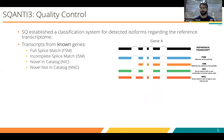If we are missing some of the splice junctions, this is the case of an incomplete splice match. But if we have some kind of novelty at the splice-site level — for example, a new combination of already known splice junctions — we will call it novel in catalog. But if we detect a completely new splice site, this will be called novel not in catalog.